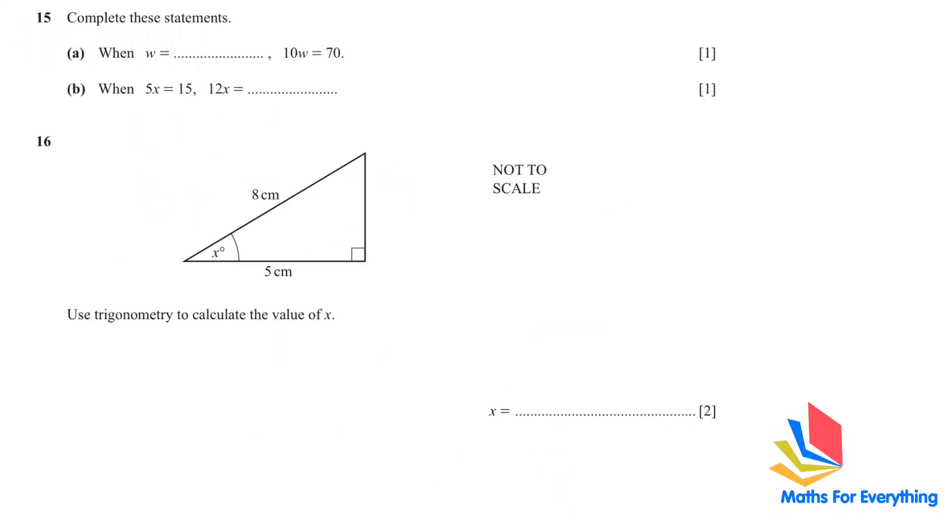Question number 15. Complete these statements. When W is equal to 10, 10W is equal to 70. Therefore, W is equal to 70 divided by 10, which is 7. Now, B is a little bit more different. You have 5X is equal to 15. So what is X equal to? 15 divided by 5, which is 3. So the value of X is 3. Therefore, 12X, so 12 multiplied by 3, will give us 36. 12X is equal to 36.